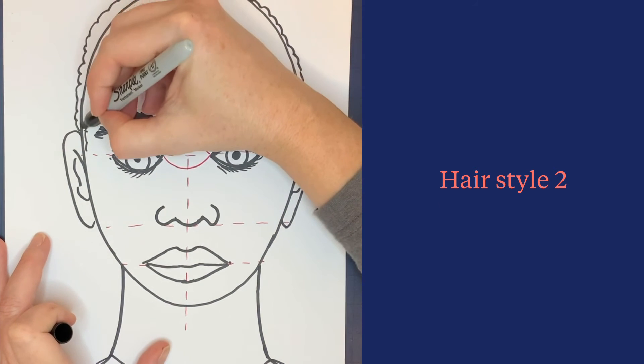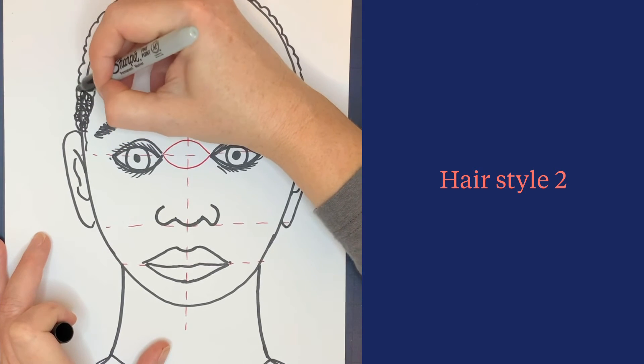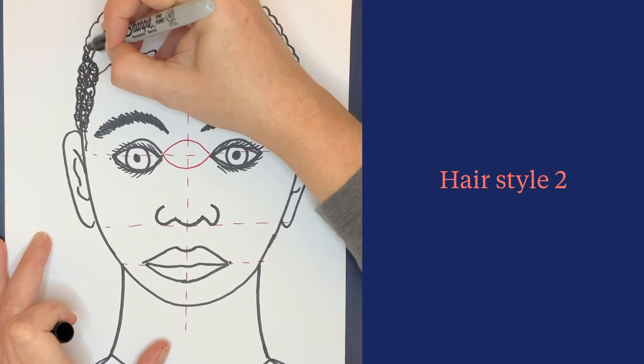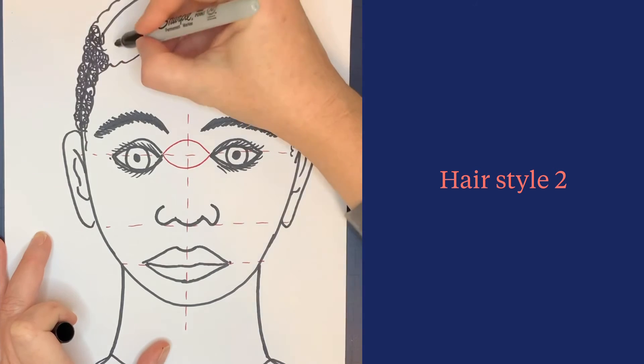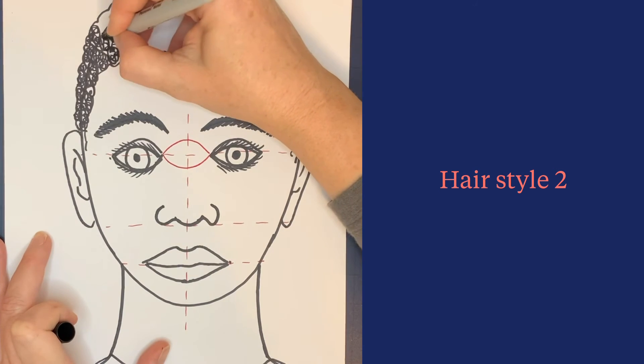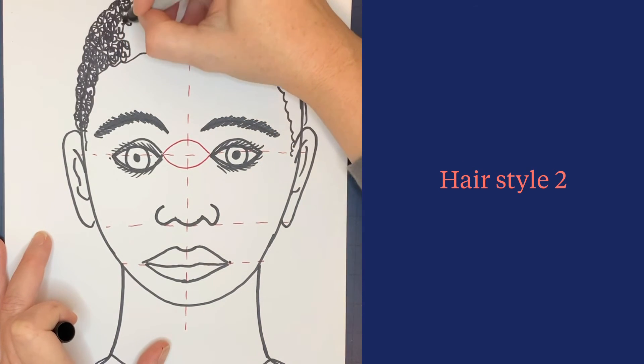Inside, add scumbling - that's where you draw little tiny circles that overlap each other. It takes a while, but it's a good style.